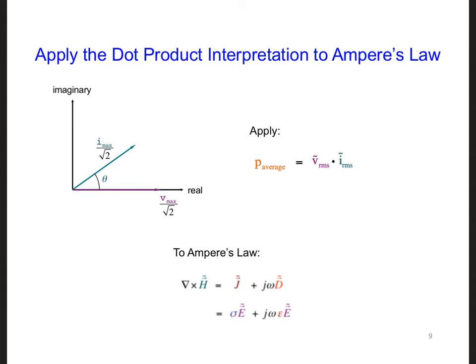Let's now see how this relates to Ampere's law and propagating electromagnetic waves. When we studied Ampere's law, we saw that both conduction and displacement currents can generate magnetic fields. The phasor domain pointwise form of Ampere's law is shown here.